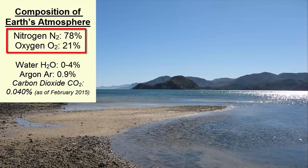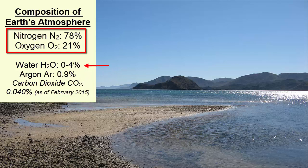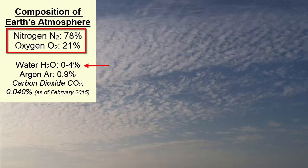Earth's atmosphere, when totally dry with no evaporated water, is composed of approximately 78% nitrogen gas and 21% oxygen gas. All other gases, including the greenhouse gases mentioned earlier, are found in abundances of less than 1%. For example, carbon dioxide, even in its ever-increasing abundance, is still only 0.040% of the atmosphere as of February 2015. Water is a little different — wet air can change those percentages, as water can be present in amounts of 4% or less. When air is warm, it has a greater capacity for water.